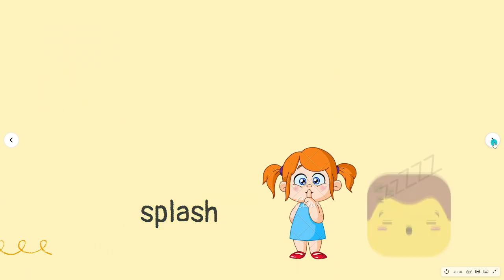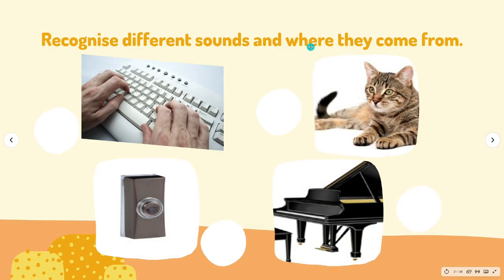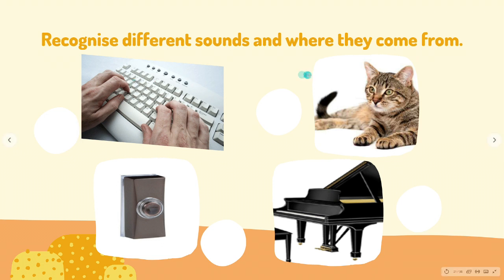Now, listen carefully and recognize different sounds and where these sounds come from. What did you hear? Hands typing on a keyboard. How about this one? Cat meowing. How about this one? Listen. What did you hear? That is the sound from a doorbell ring. How about this one? From a piano playing.